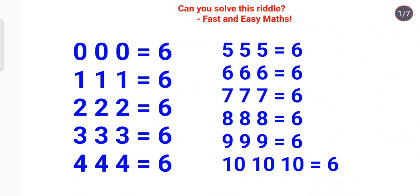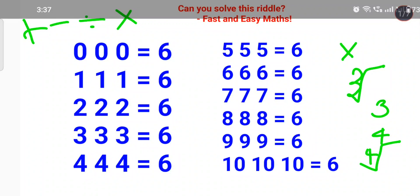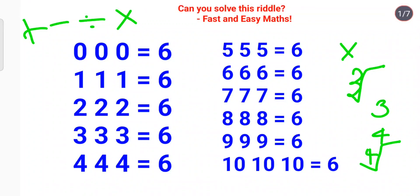First and very important: you cannot add any digit besides the digits given. You cannot do a cube root, a cube, raise to the 4th power, or a 4th root — all of that is not allowed. However, you can use all mathematical operations like plus, minus, division, multiplication, etc. But apart from that, you cannot add any particular number to the riddle to make the combination equal to 6.